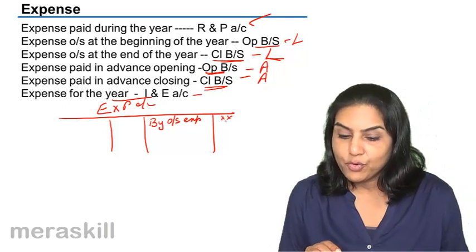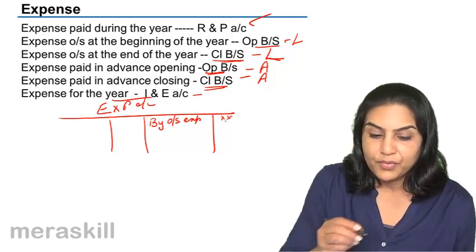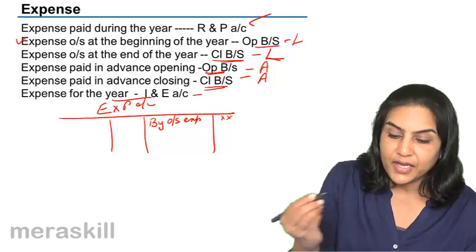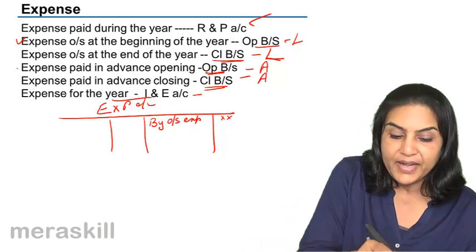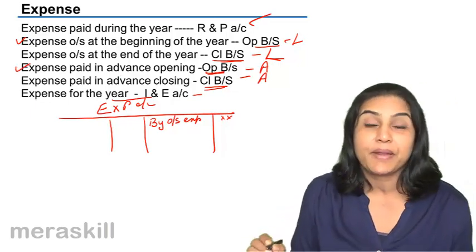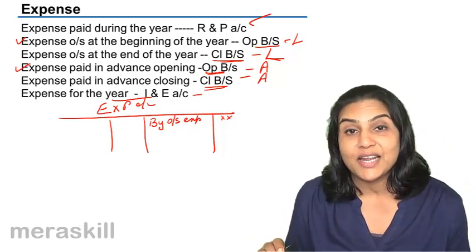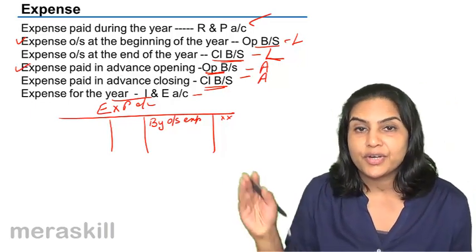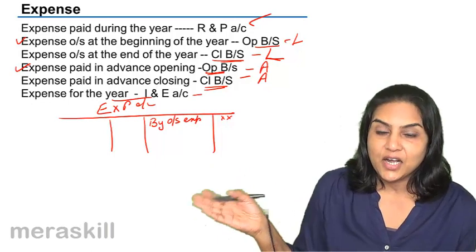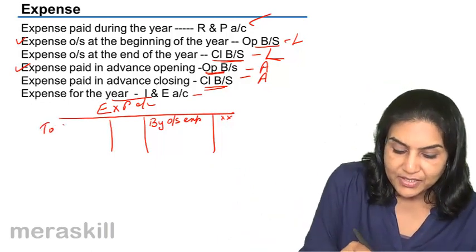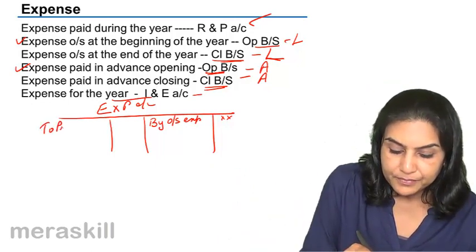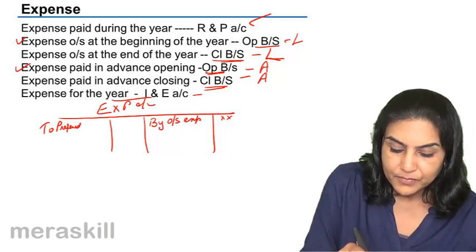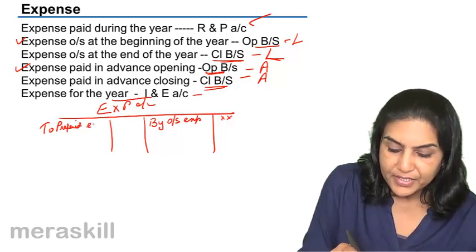What else do we have opening? We have expense paid in advance — that was an asset. So we credit the asset account and transfer that balance here to prepaid expense.